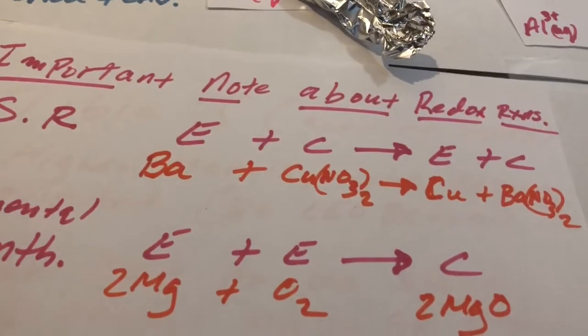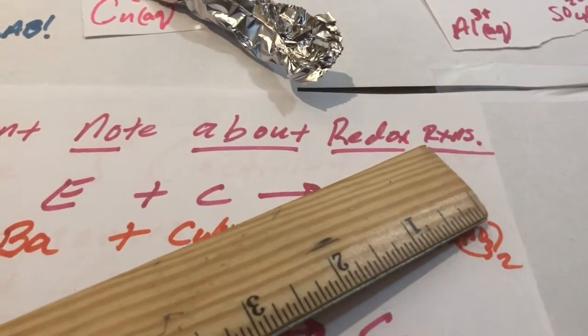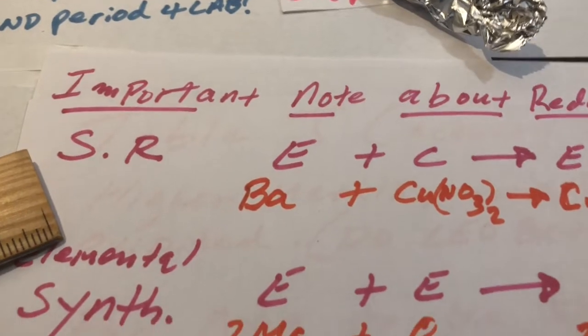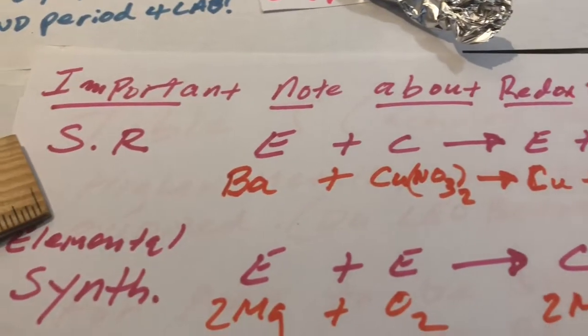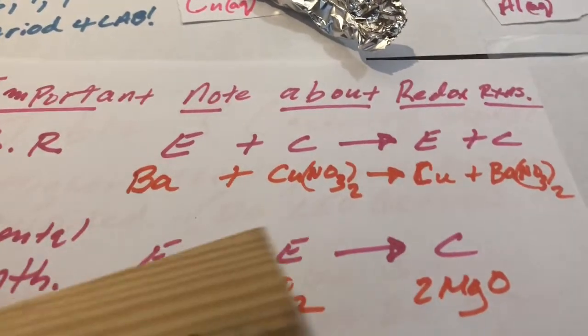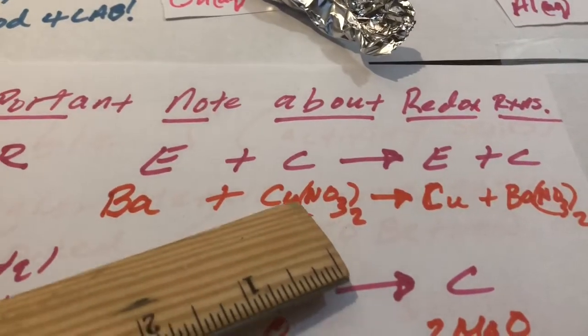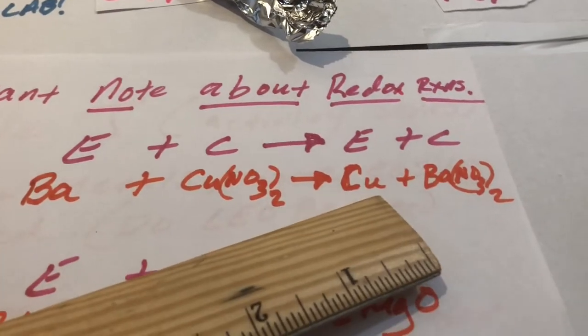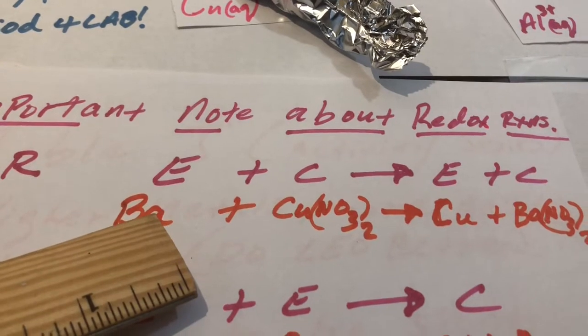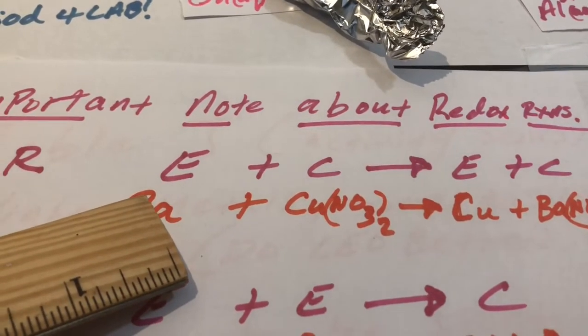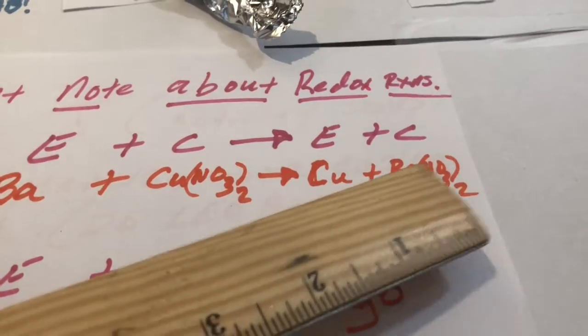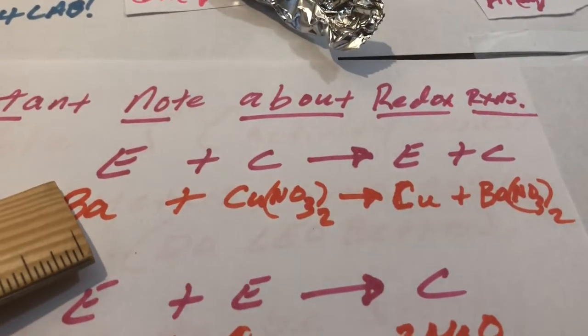I want to make a note about how to recognize redox reactions. Let's say you're taking a test and they ask which ones are redox reactions and you only have 10 seconds left. Instead of putting oxidation numbers on every last thing, here's a bit of a shortcut. For single replacement reactions, we have an element like barium reacting with a compound like copper nitrate, giving you copper and barium nitrate. If you have an element on one side and on the other side it's in a compound, the oxidation number of barium by itself is zero, but when it's in compound form barium will be 2+. So automatically you know that's a redox reaction.